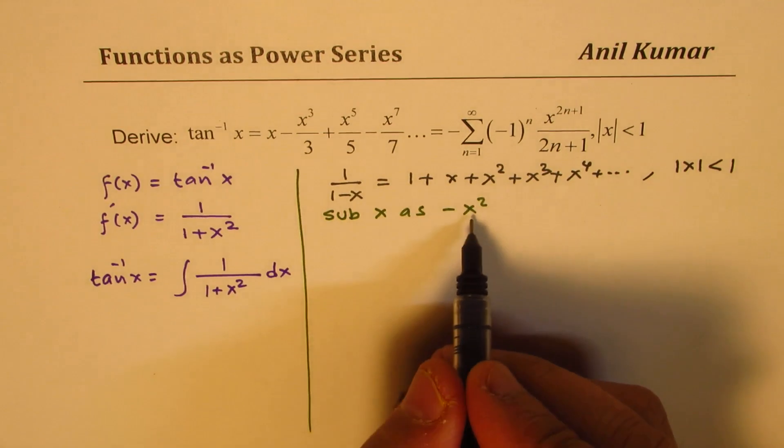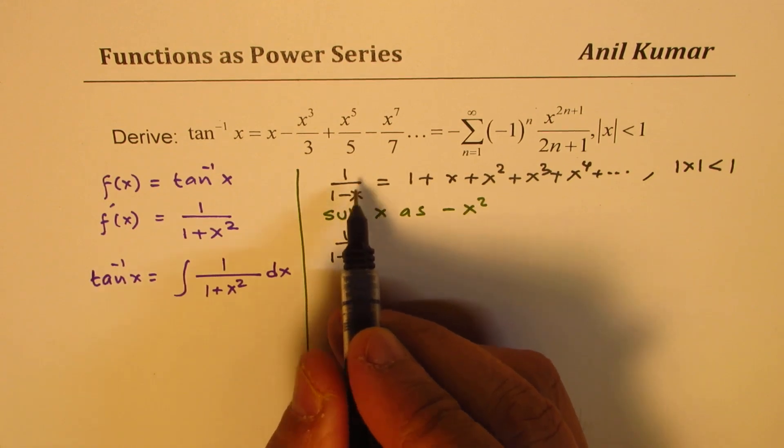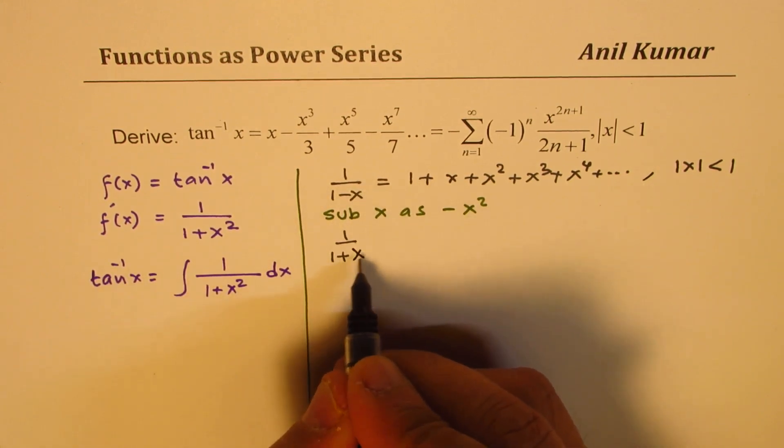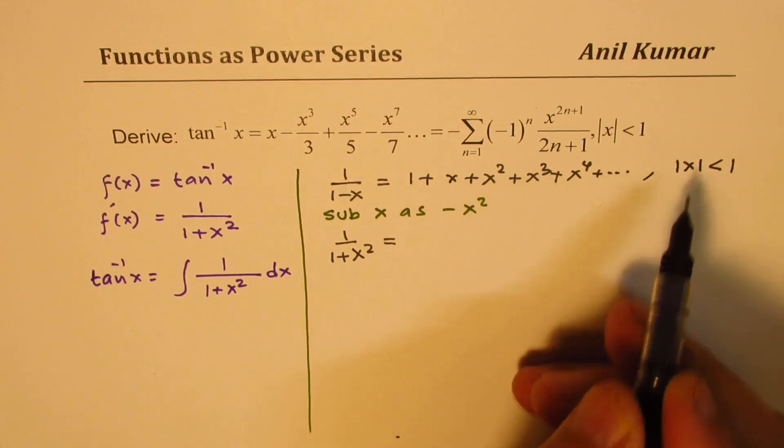Once you make that substitution, you get the series as one over one plus x squared. So minus x square makes it positive. You're just replacing all these x's with minus x squared.